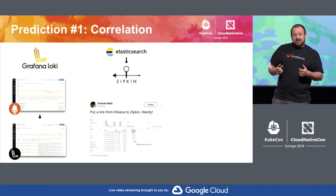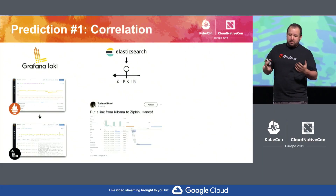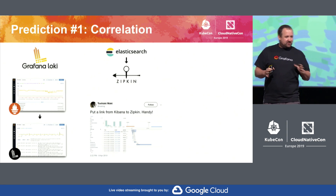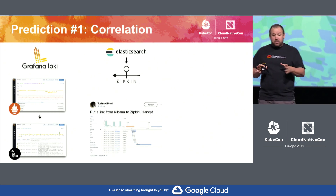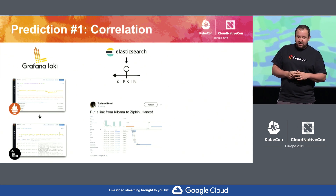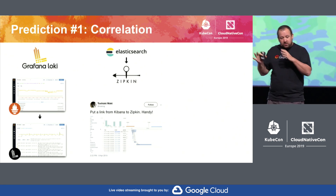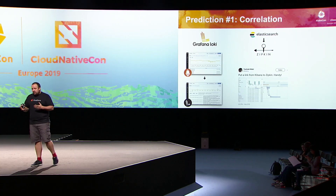The second example is Elasticsearch and Zipkin. Elasticsearch is probably the most popular log aggregation system, and Zipkin is probably the original open source distributed tracing system. In Kibana — which is the Elasticsearch UI — there is a thing called field formatters. Someone on Twitter set up their Kibana to insert a link using a field formatter so they could instantly link to their Zipkin traces. I think this is really cool, and I'm really looking forward to adding this kind of feature to Grafana.